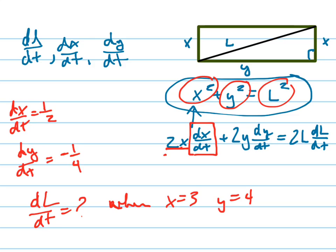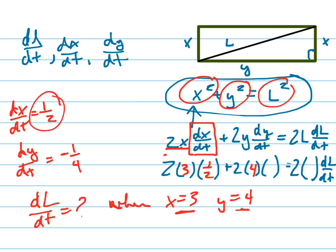I'll write this back out so you can see what I'm doing. Two times x times DX/DT plus two times y times DY/DT equals two times L times DL/DT, which is what I'm trying to solve for. I already have most of these values: x equals 3, y equals 4, DX/DT equals 1.5, DY/DT equals negative 1.4.